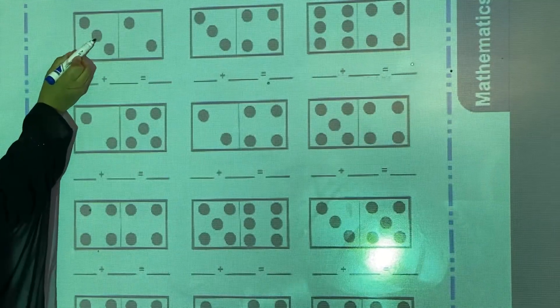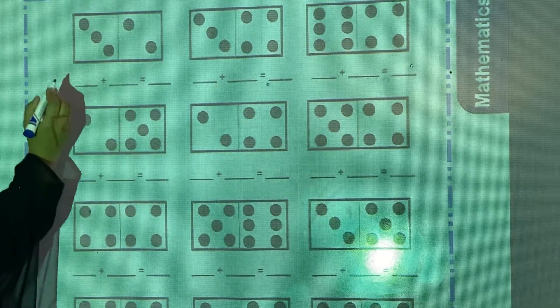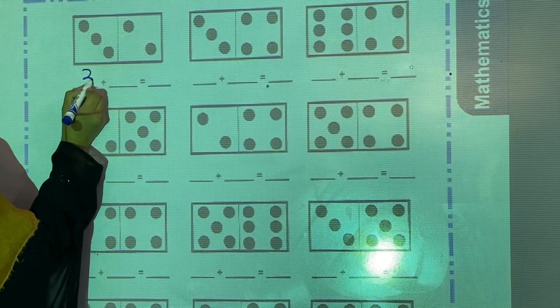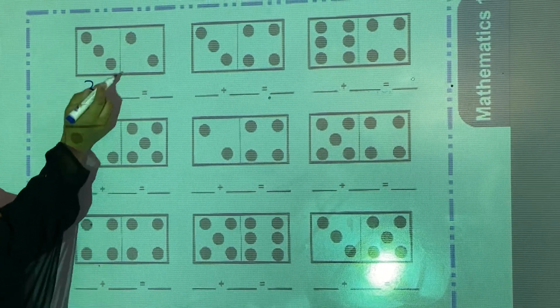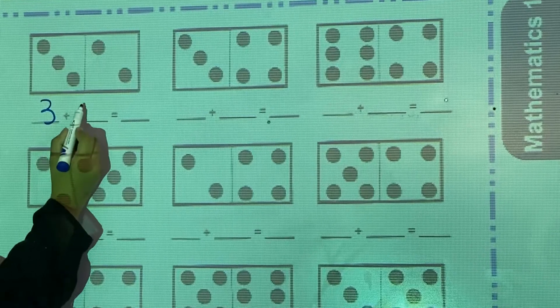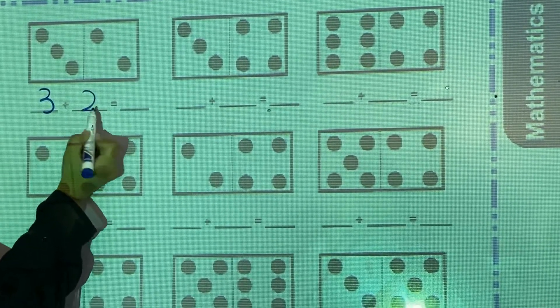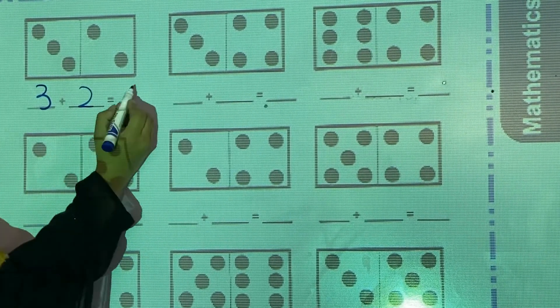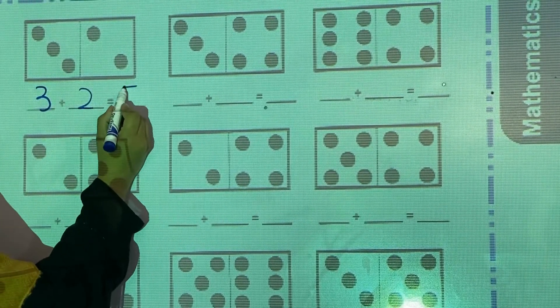Count: 1, 2, 3. You will write 3 here. Then 1, 2, and 2. So 3 plus 2 equals 5.